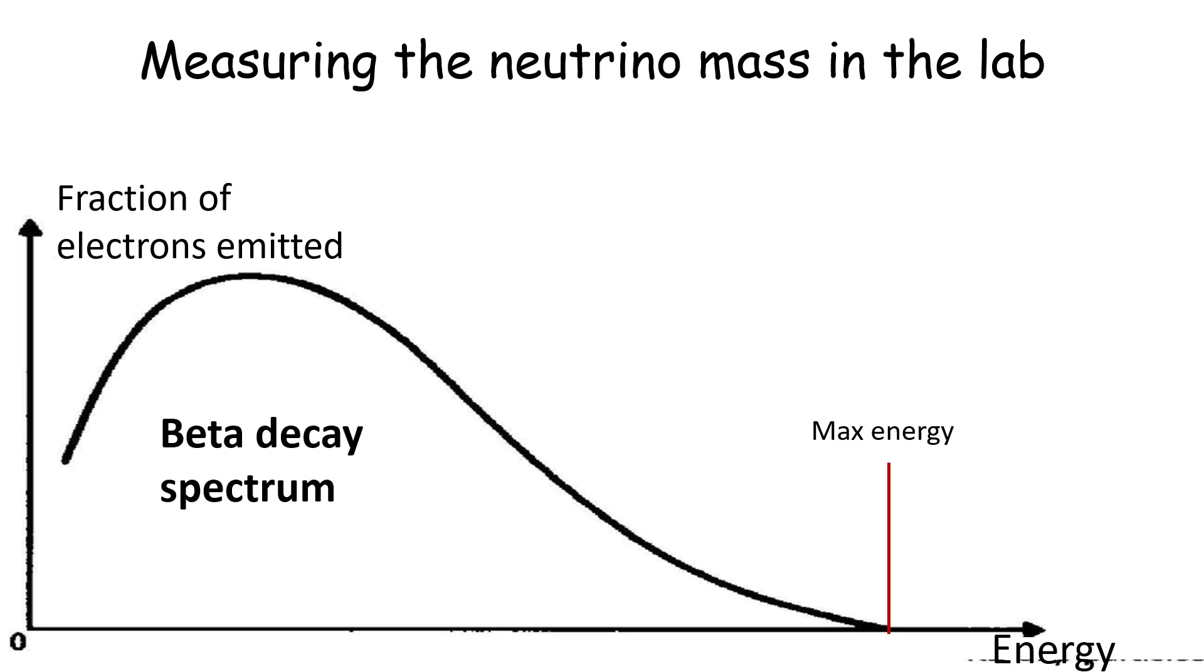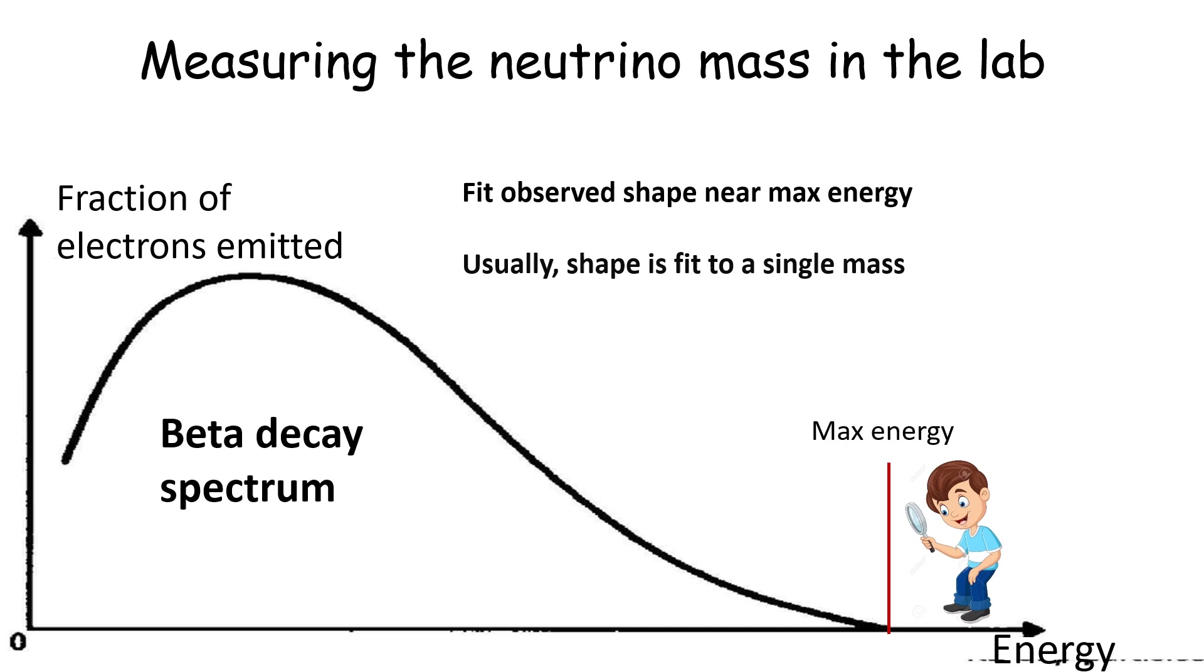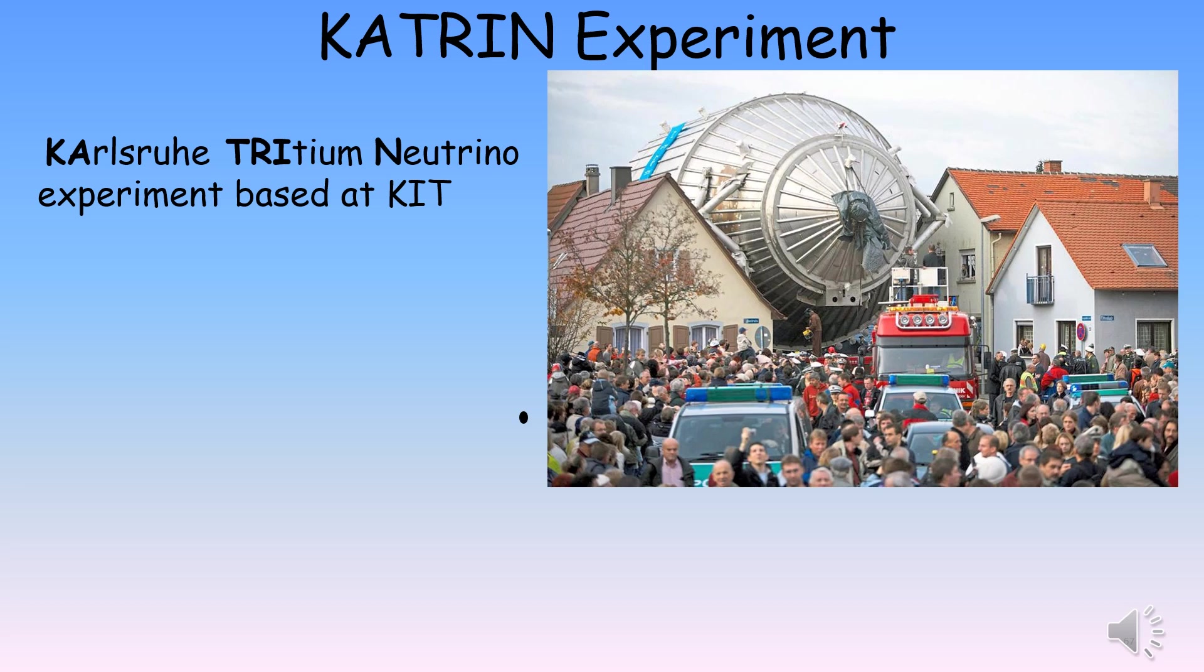As we saw earlier, neutrinos are emitted in the process of beta decay, which in fact was the reaction that gave Wolfgang Pauli the idea of proposing the ghostly particle in the first place. The shape of the spectrum, very close to the maximum electron energy, is dependent on the neutrino mass. So measuring that shape with high precision allows us to find a value for the mass in principle. Normally people doing these experiments fit their observed spectrum to a single mass in view of the widespread belief that the three neutrinos have almost indistinguishable masses. The result of these experiments so far has been only an upper limit to the neutrino mass.